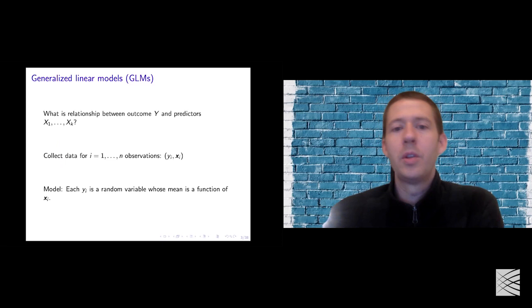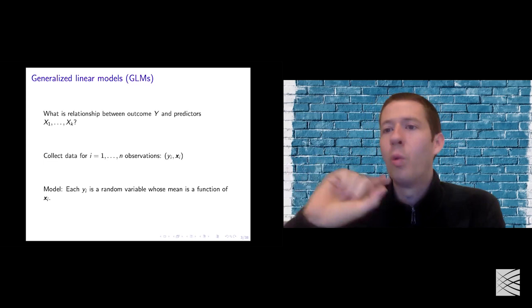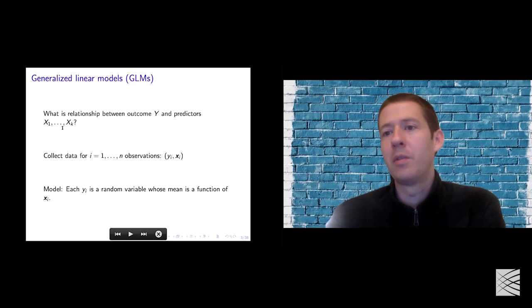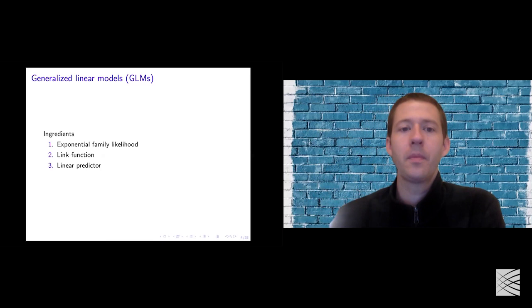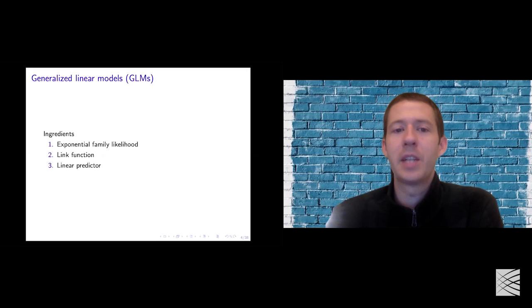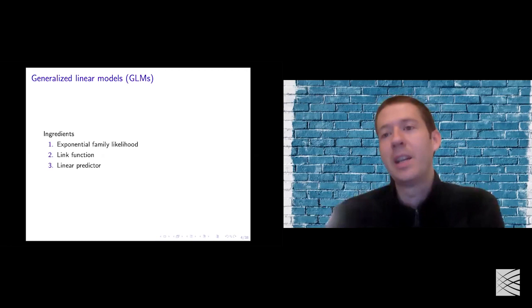As a motivating example, think about differential expression for just one gene. If you're looking at one gene, x could be indicator variables for your biological condition, and y would be the expression level of that gene in each of the replicates. There are three components or ingredients to a GLM: the exponential family likelihood, the link function, and the linear predictor — and I'll explain each in more detail.